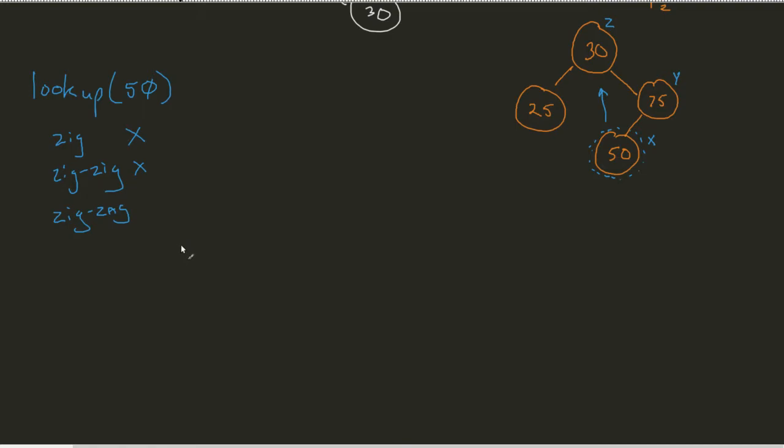Now, if we are going through those rules of what I do, since I've seen I got a zig-zag, that means I do my trinode restructuring.